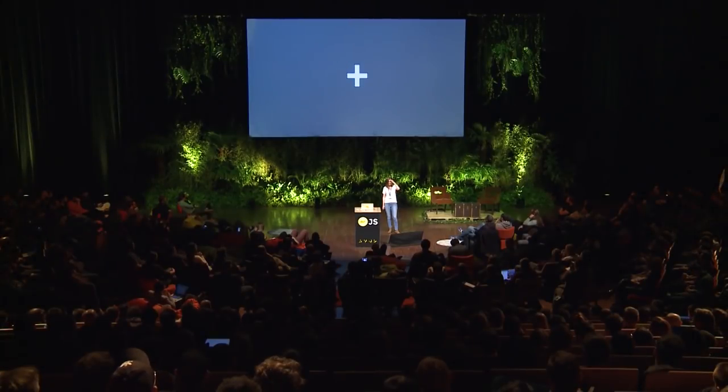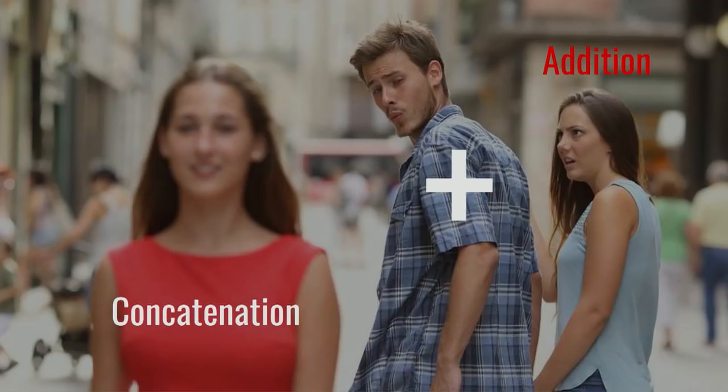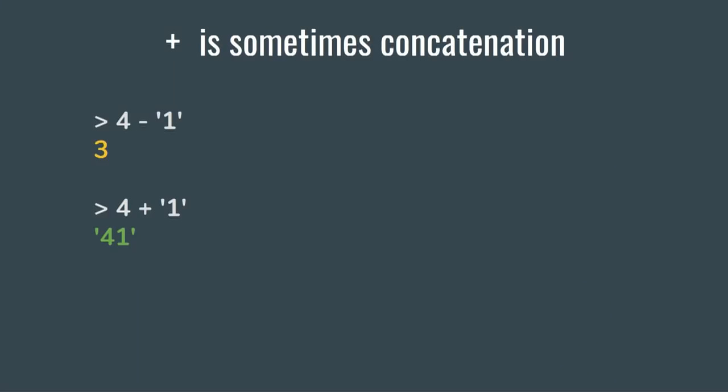Let's start with plus. Plus is used for addition of two numbers or concatenation of two strings, but if you start mixing types in JavaScript, it can be confusing which operation will appear. For other math operators, if you use mixed types, the result is safe — you will have a casting of all operands to numbers. But if you use plus, the opposite will happen: your number will be cast to a string.